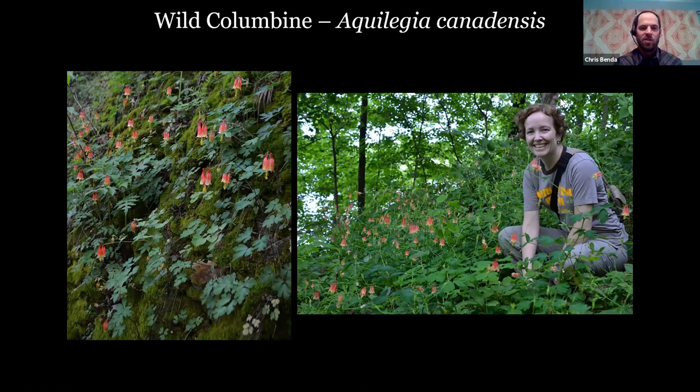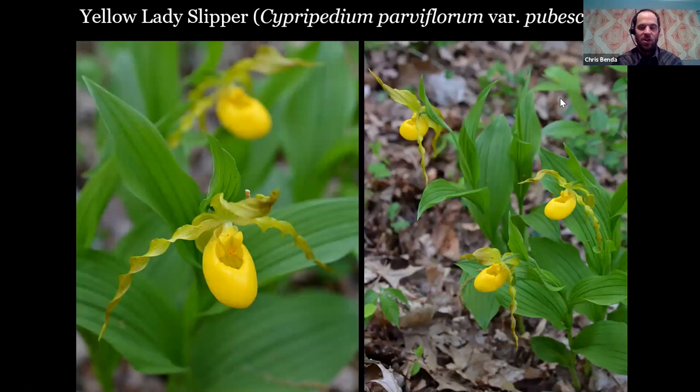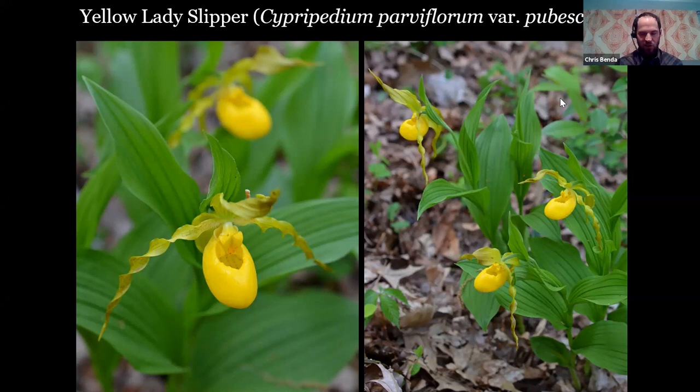Wild columbine — a beautiful wildflower, my wife there posing with them. Bishop's cap. Doll's eyes. Yellow lady's slippers — one of my favorites and they'll be blooming at the end of April. I found a number of new populations last year in the summertime when they weren't blooming, so I'm excited to go back and see them bloom. They'll make your heart stop, they're so beautiful.